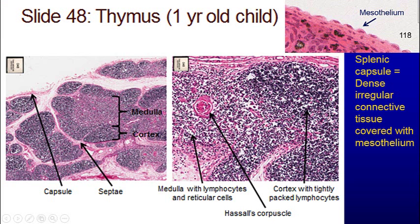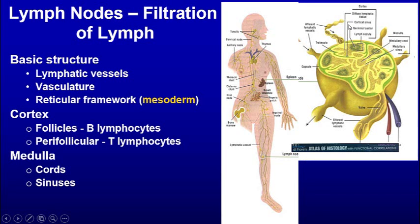From a one-year-old child, you can see the different lobes, a capsule with septa coming down, and the medulla and cortex. The capsule is dense irregular connective tissue with a mesothelial lining. And then we have lymph nodes — the lymph node is a secondary organ for filtration of lymph, so we expect to find lymph sinuses in there.